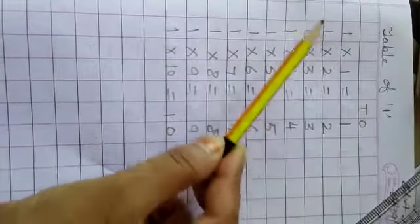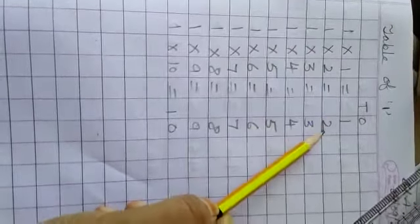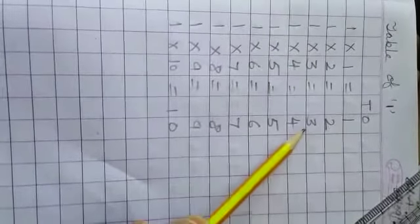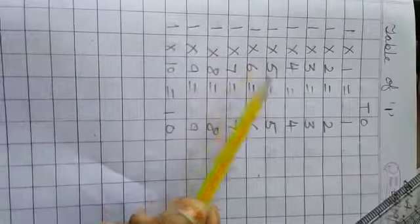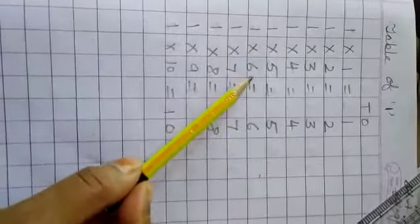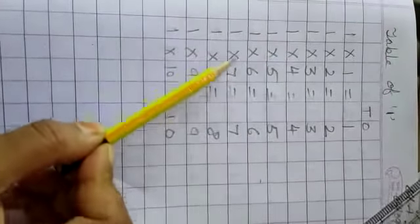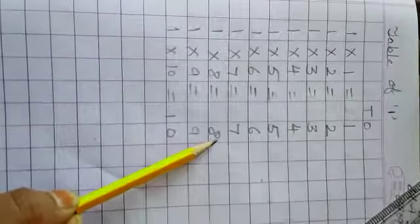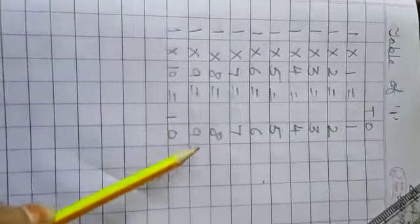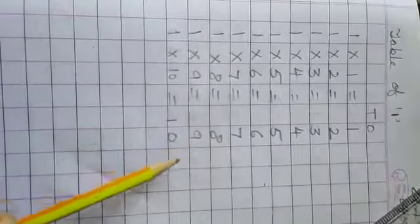One ones are one. One twos are two. One threes are three. One fours are four. One fives are five. One sixes are six. One sevens are seven. One eights are eight. One nines are nine. And one tens are ten.